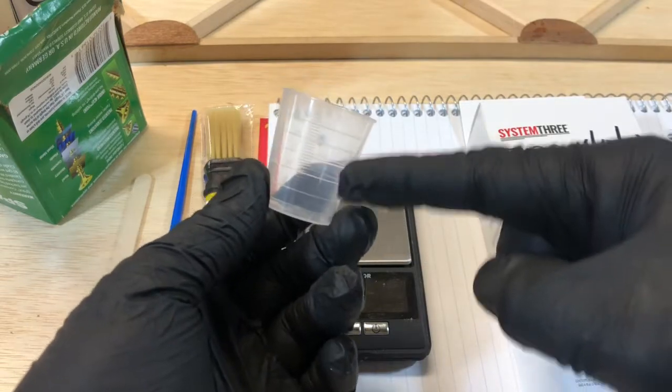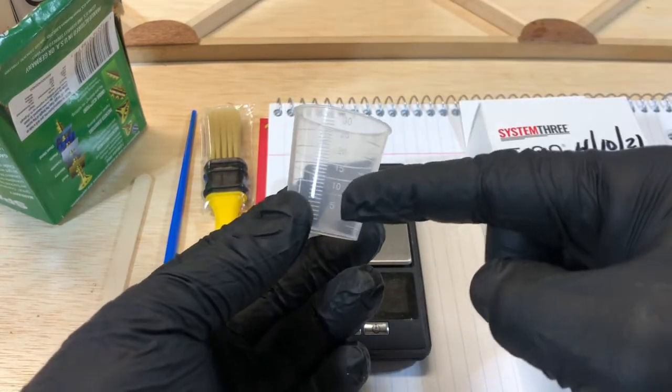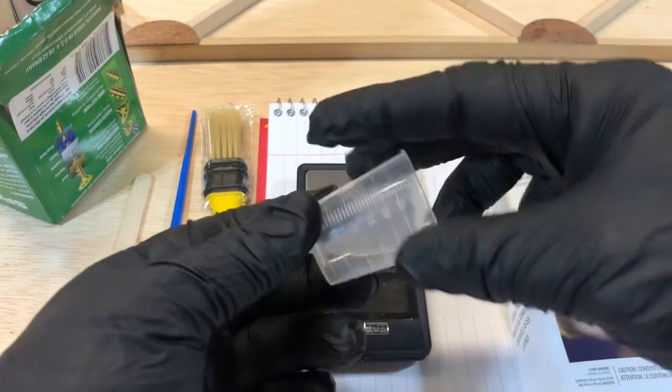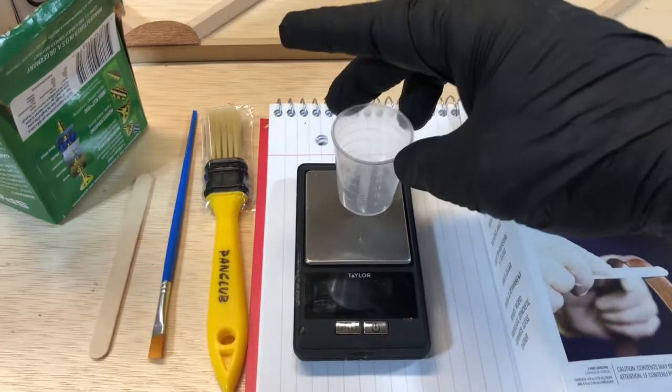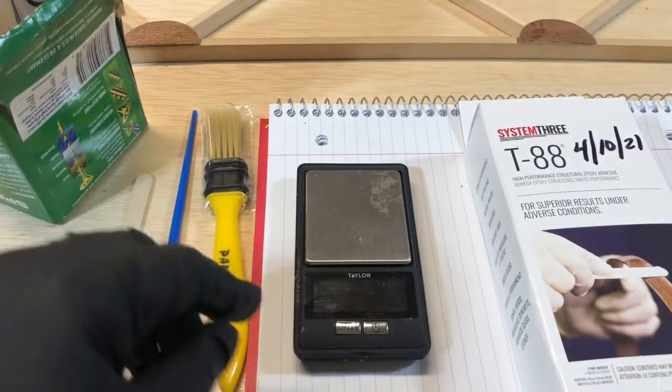You would just pour equal amounts in here, say five milliliters and then another five to get ten milliliters. That can be a little challenging to get the right volume, so a more accurate method is by weight and using a small scale.